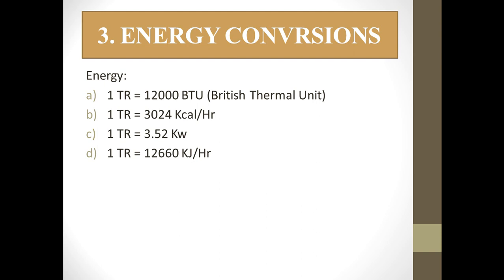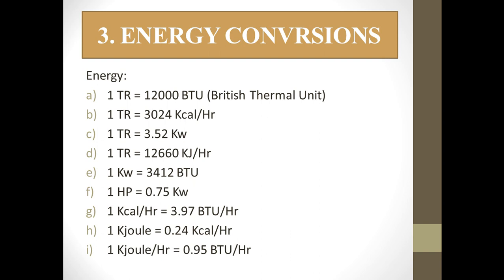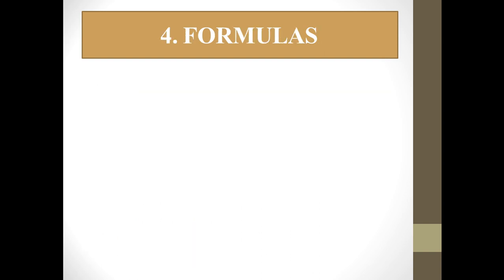Continuing energy conversions: (c) 1 TR = 3.52 kW; (d) 1 TR = 12,660 kJ per hour; (e) 1 kW = 3412 BTU; (f) 1 HP (horsepower) = 0.7275 kW; (g) 1 kcal per hour = 3.97 BTU per hour; (h) 1 kJ = 0.24 BTU; (i) 1 kJ per hour = 0.15 BTU per hour.